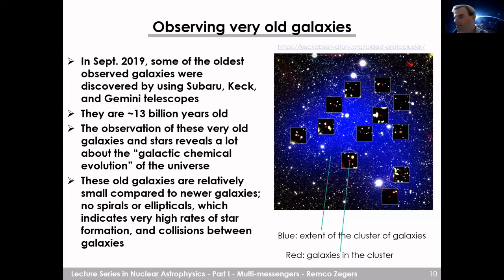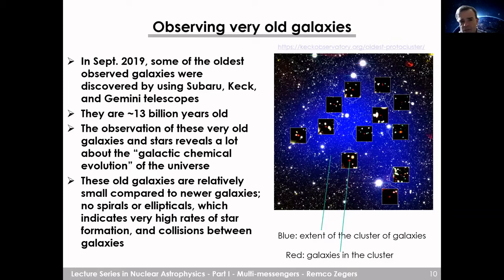It's really remarkable that you can look back in time and observe very old galaxies. For example, in September 2019, some of the oldest observed galaxies were discovered using the Subaru, Keck, and Gemini telescopes. These galaxies are about 13 billion years old, and their observation reveals a lot about the collective chemical evolution of the universe. These old galaxies are relatively small, with no spirals or ellipticals like our own galaxy, indicating very high rates of star formation and collisions between galaxies.